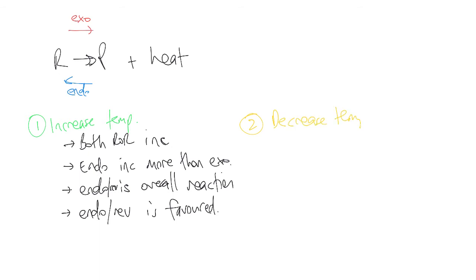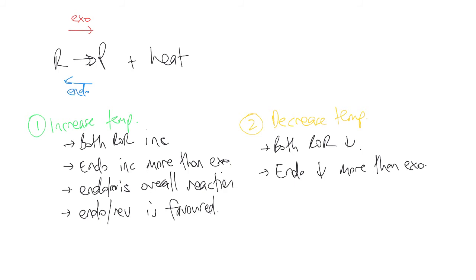Now what happens if we decrease the temperature? If we decrease the temperature, then both rates of reaction are going to decrease. However, the endo is going to decrease more than the exo. So if the endo is now lower than the exo — because both decreased but endo decreased more — therefore the exo is the net or overall reaction. In this case, the exo is the forward reaction, so the forward reaction is favored.